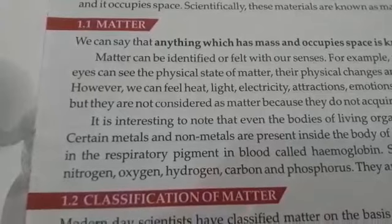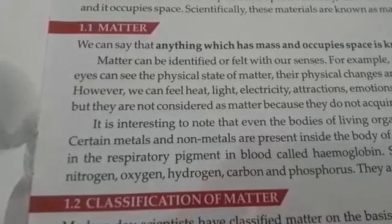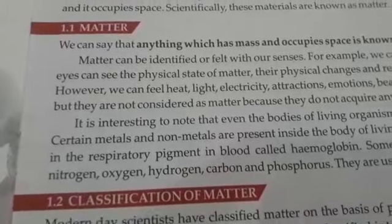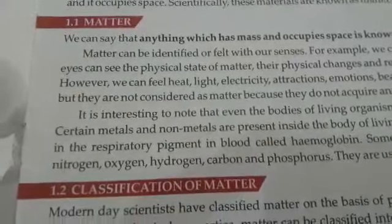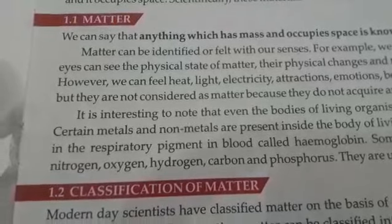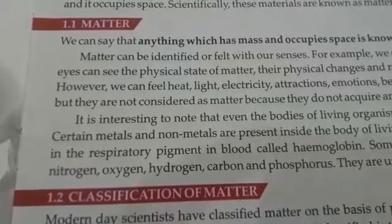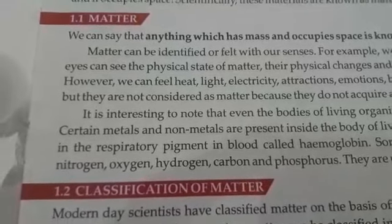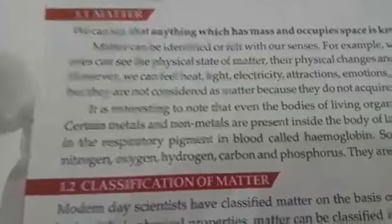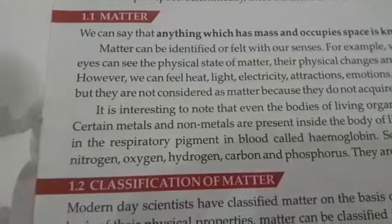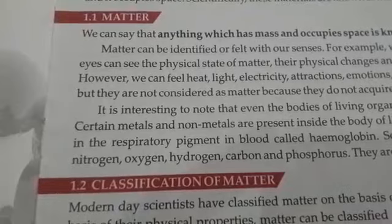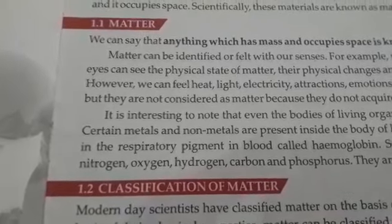Sourness is an acidic property that makes any citric substance or citric fruit sour, while bitterness is a basic property that washing soda or baking soda have. Chemistry is the branch of science which deals with such properties and behavior of substances.